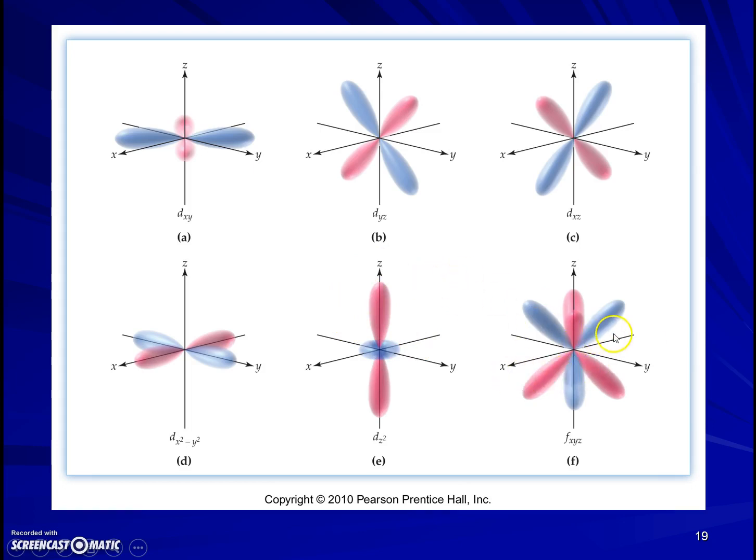Here we realize that f orbitals are even more complicated, or f sublevels, because they're going to have more planar nodes than the d sublevels. Each time we move up in energy level, we add another node, and each time we move up in l sublevel, whether we go from s to p to d, we add another planar or conical node.